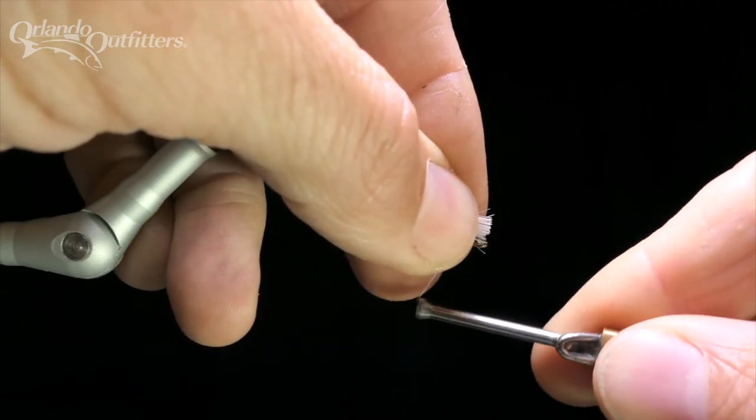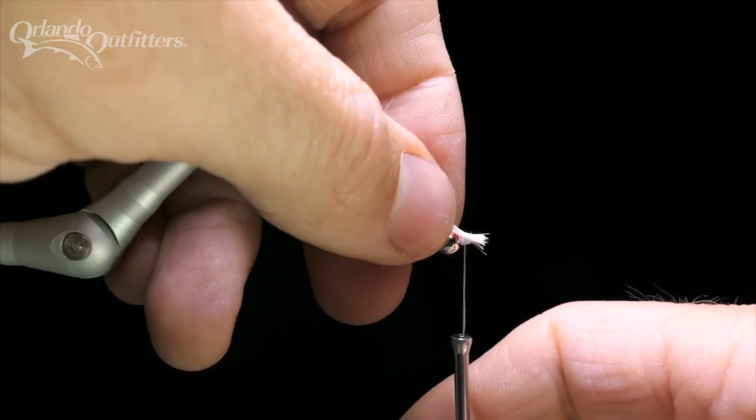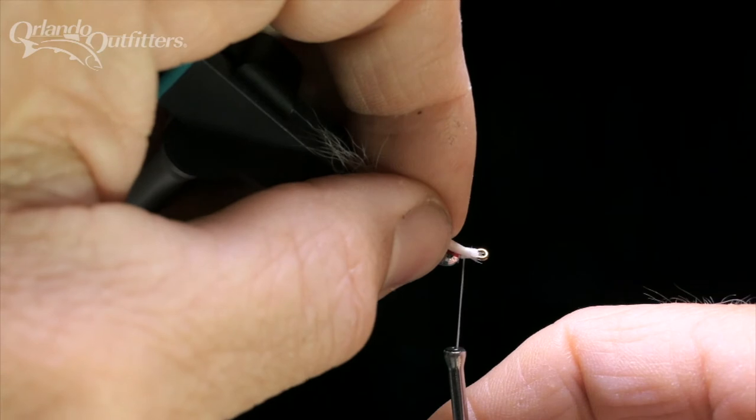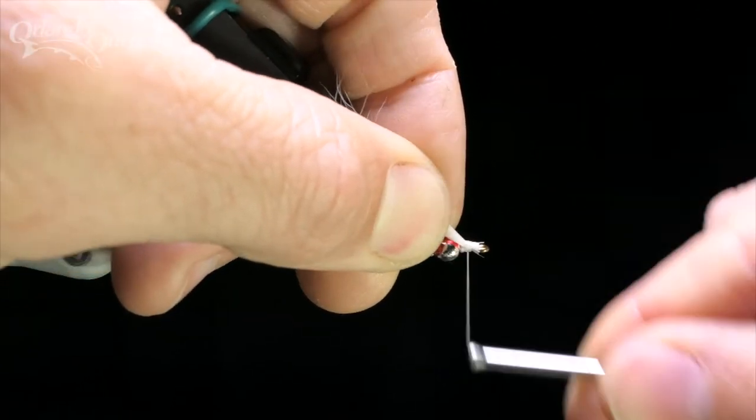To make the head as neat as possible, I like to tie it in with the butts extending over the hook eye. I'll make a couple of snug, but not completely tight, wraps. Then, bracing against the hook and vise to control movement, I'll carefully pull the bundle of calf tail back until the butts are just behind the hook eye.